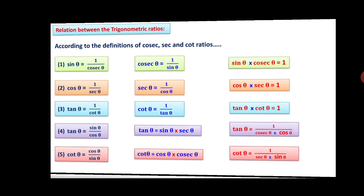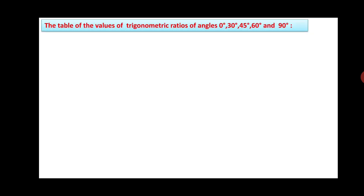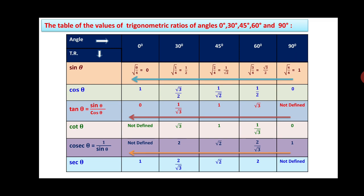Next is the table of values of trigonometric ratios for angles 0°, 30°, 45°, 60°, and 90°. Vertically you can see the six ratios: sin, cos, tan, cot, cosec, and sec. Horizontally are the angles. It is not necessary to memorize — you just need to know how this table is recalled. For the sine row, write 0, 1, 2, 3, 4 for the respective angle columns.